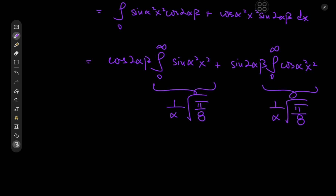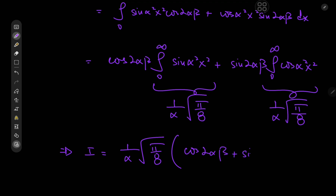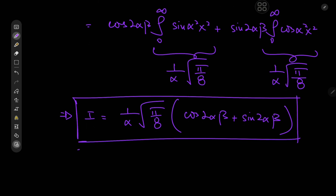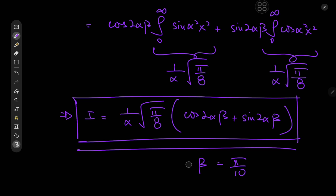Look around and you'll find lots of interesting stuff. We have I equal to — factoring out 1 over alpha times the square root of pi over 8 — we're left with cosine of 2 alpha beta plus sine of 2 alpha beta, which is a very nice result in terms of both parameters alpha and beta. We might even get a nice result involving the golden ratio if the product of alpha and beta equals pi over 10 — comment down below what that should look like.